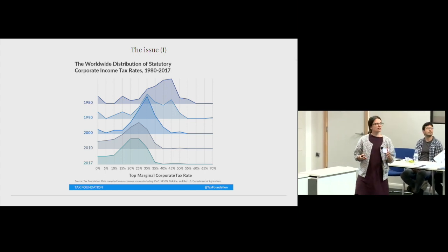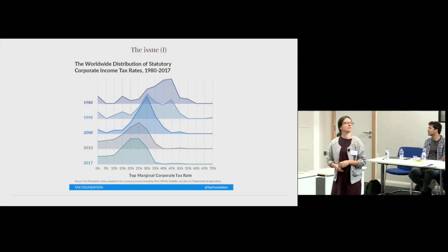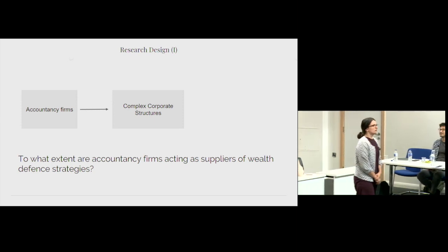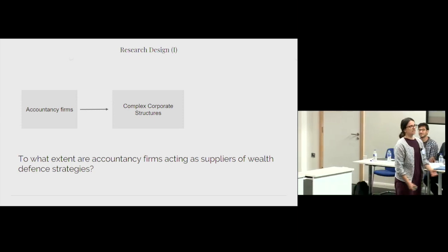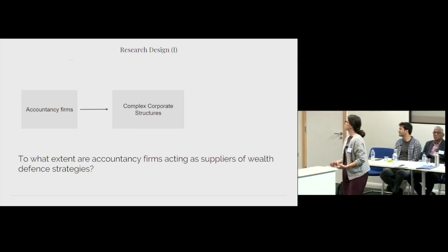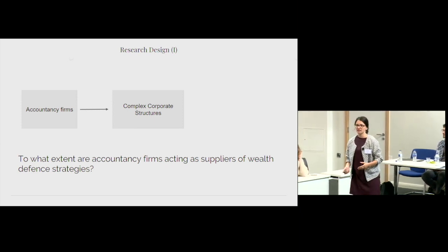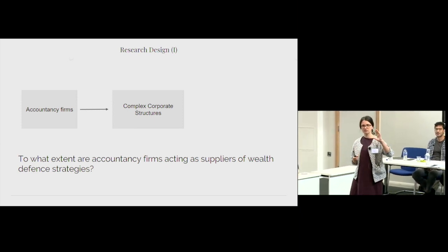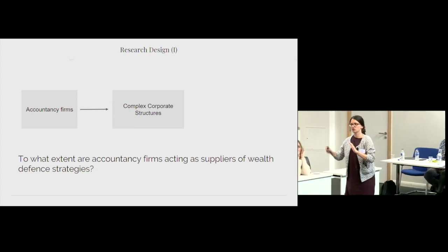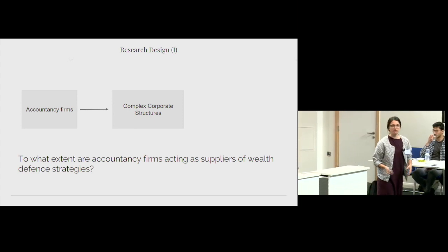The wealth defense industry is composed of very different and various actors. We focus on one of them, namely the accountancy firms. So the question is, to what extent are accountancy firms involved in tax avoidance? How do they act as suppliers of wealth defense? What we did is we looked at the influence of accountancy firms on corporate structures that we can assume to be related to tax avoidance practices.